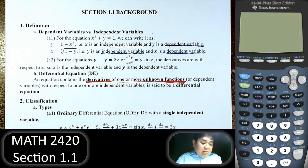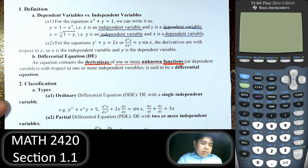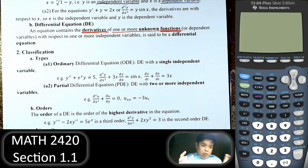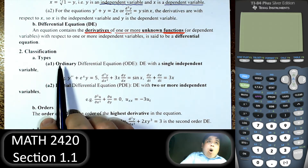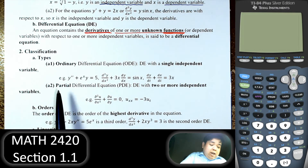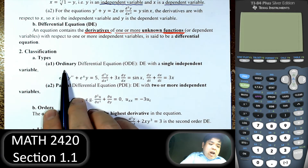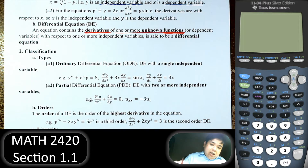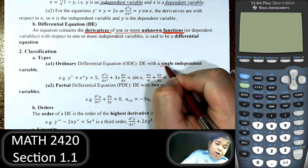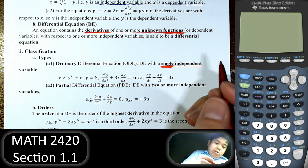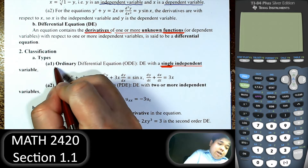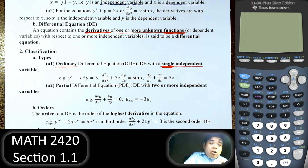Now we will classify differential equations. There are different types and we can classify in different ways. First, classify by type — the types are ordinary differential equations and partial differential equations. An ordinary differential equation is an equation with only one independent variable.